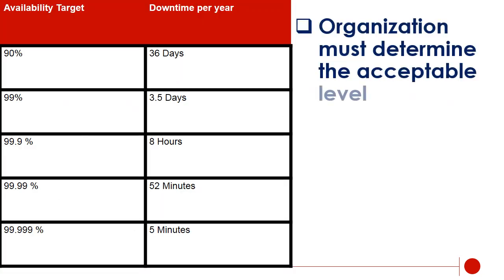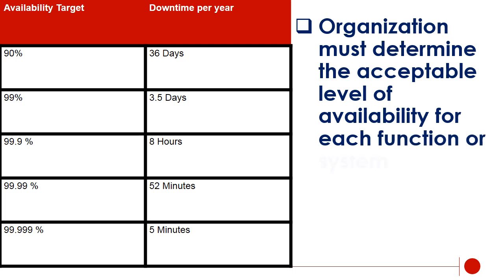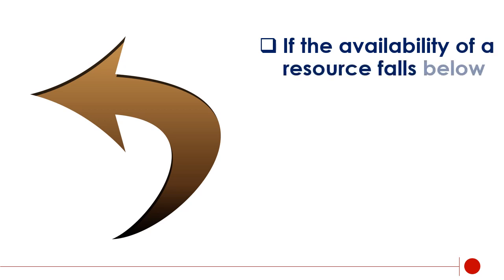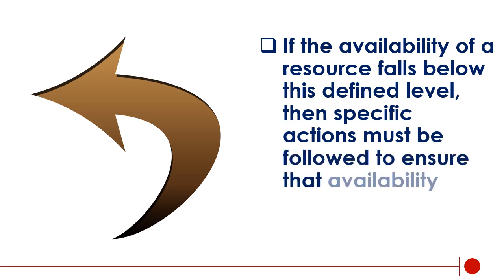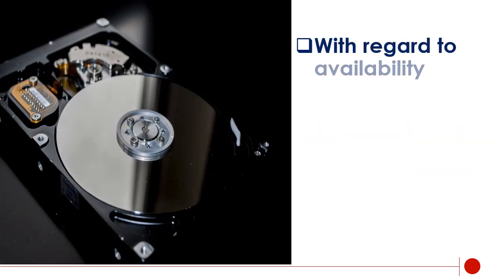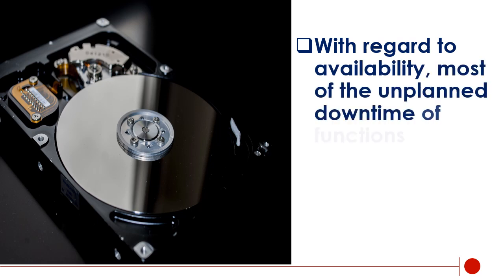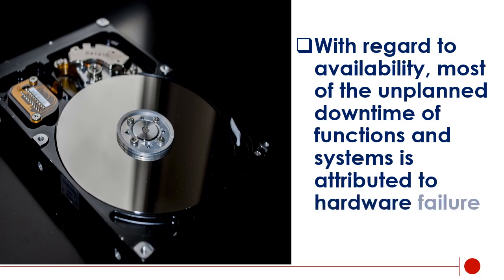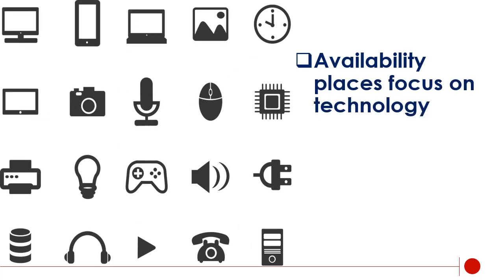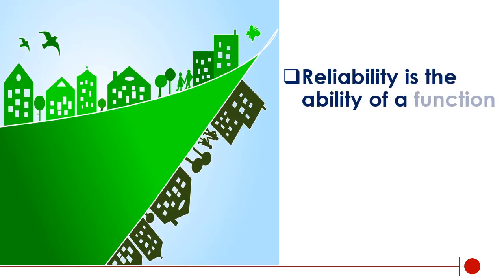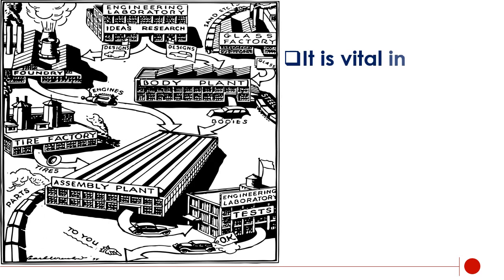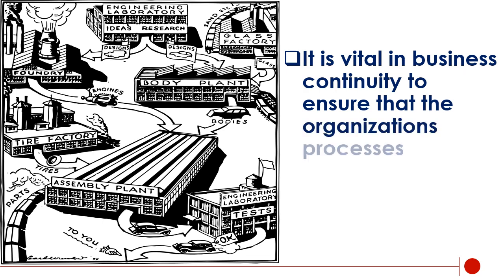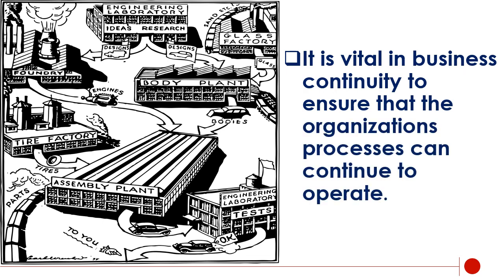The organization must determine the acceptable level of availability for each function or system. If the availability of a resource falls below this defined level, then specific actions must be followed to ensure that availability is restored. Most of the unplanned downtime of functions and systems is attributed to hardware failure. Availability places focus on technology. Reliability is the ability of a function or system to consistently perform according to specifications. It is vital in business continuity to ensure that the organization's processes can continue to operate. Reliability focuses on processes.